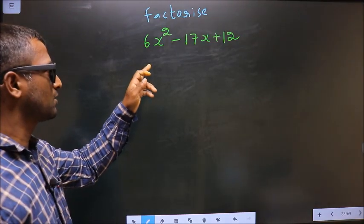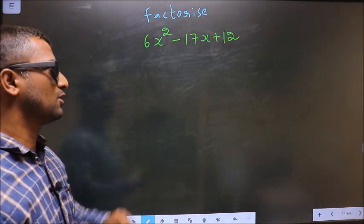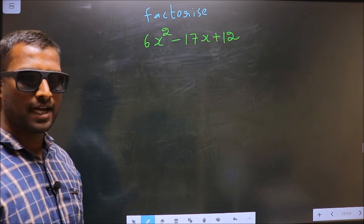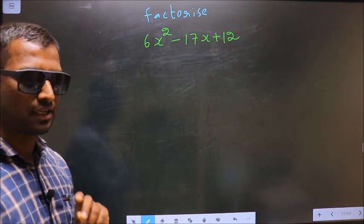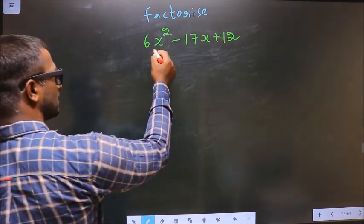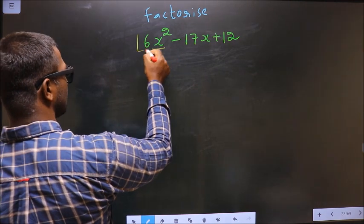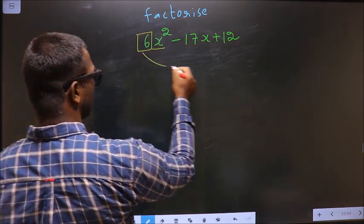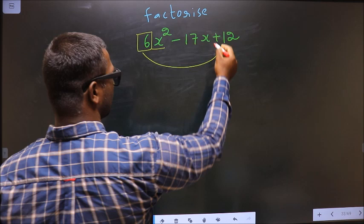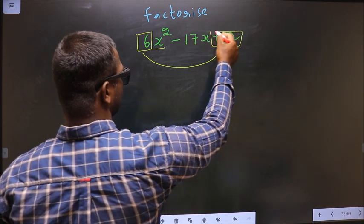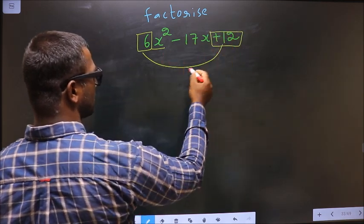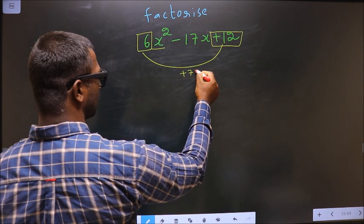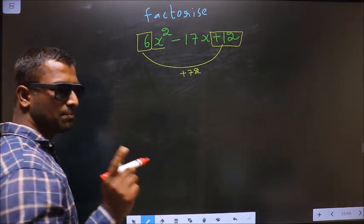Factorize 6x² - 17x + 12. To factorize, step 1: the coefficient of x², which is 6 here, should be multiplied to the constant, that is +12. So 6 into +12 is +72. This is your step 1.